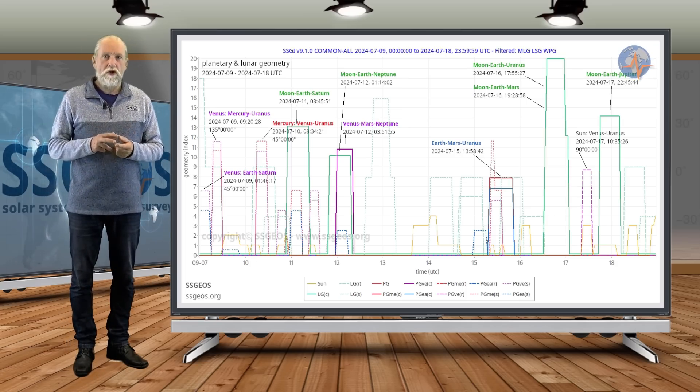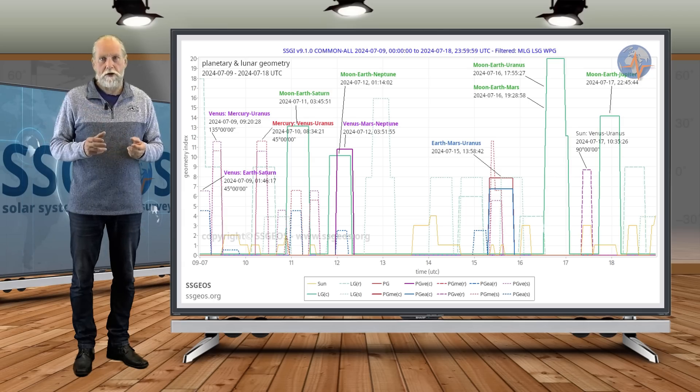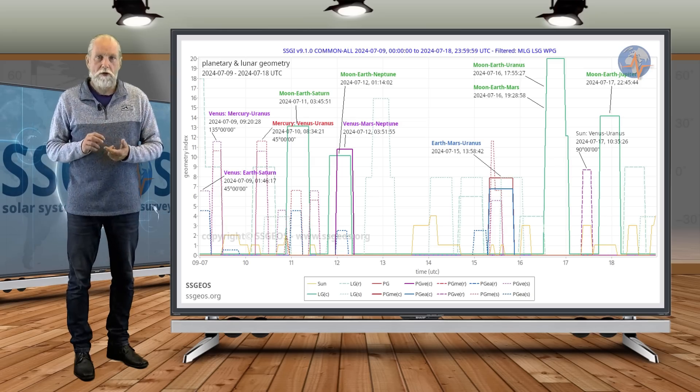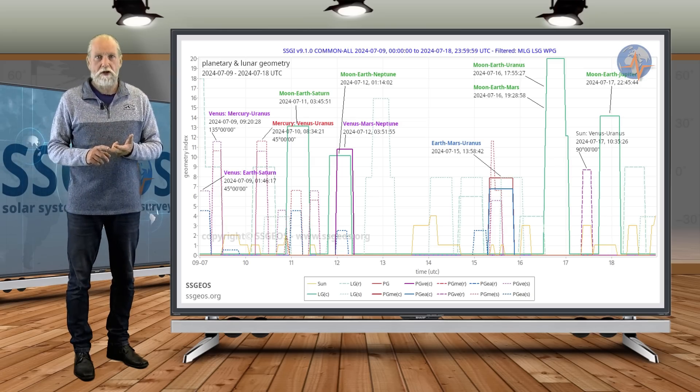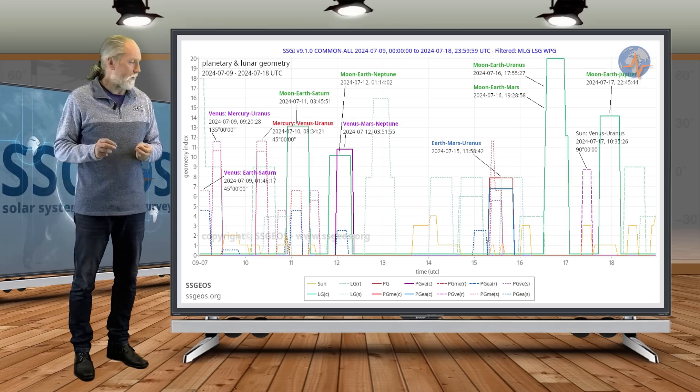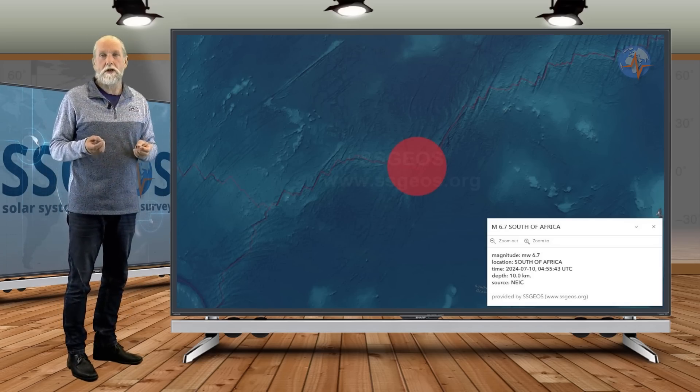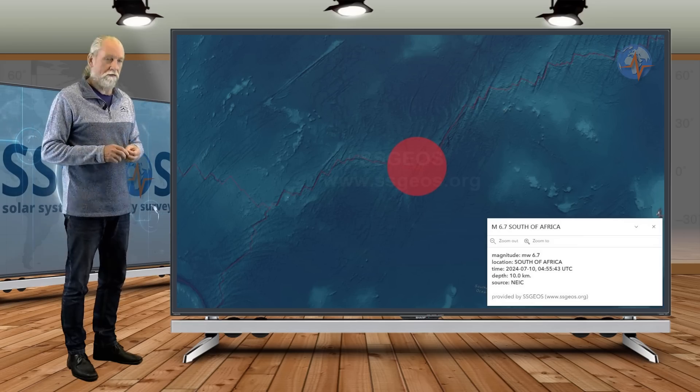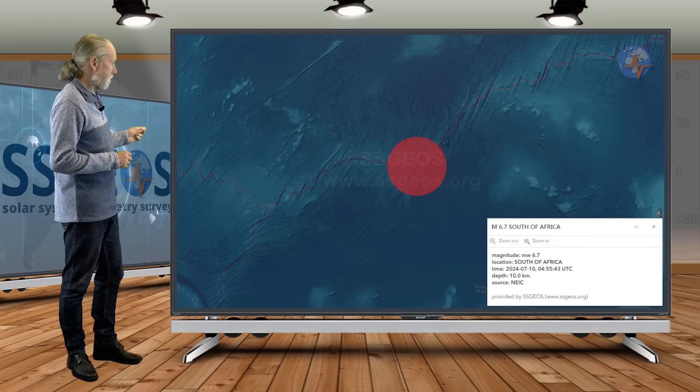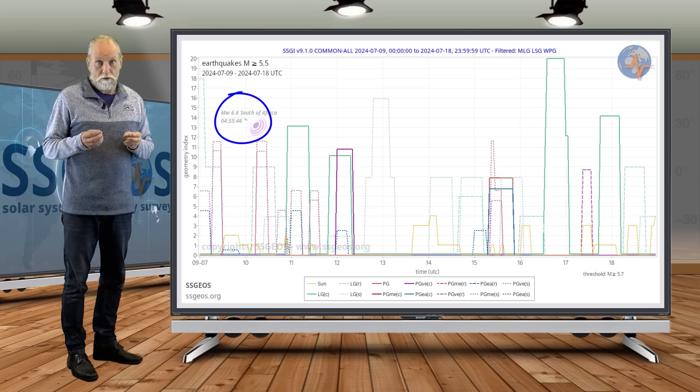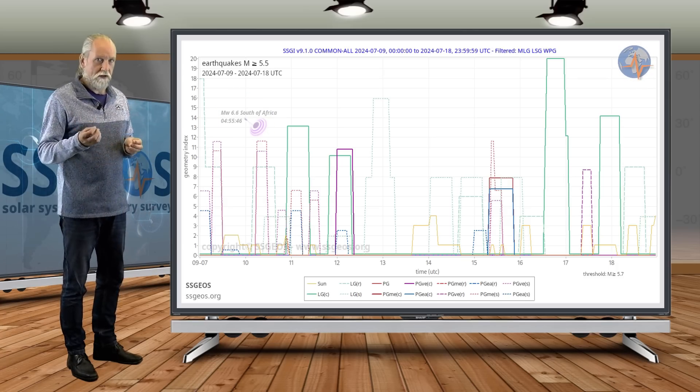Mercury-Venus in combination should never be underestimated, in particular with Uranus. It can be a conjunction, it can be right angle or semi-right angle. That's the specific geometry that we look at. This morning, following this geometry, we had actually a 6.6, some agencies reported 6.7 south of Africa. And that followed on the semi-right angle geometry with Venus, Venus in particular.